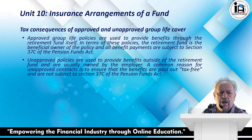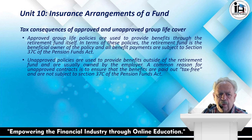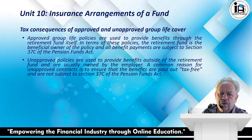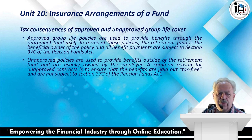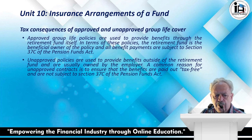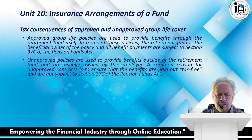What are the tax consequences of approved versus unapproved group life cover? Approved group life cover policies are used to provide benefits through the retirement fund itself. The retirement fund is the beneficiary and owner of the policy, and all benefit payments are subject to Section 37C of the Pension Funds Act. Unapproved policies are used to provide benefits outside of the retirement fund and are usually owned by the employer. A common reason for an unapproved contract is to ensure benefits are paid out tax-free, not subject to Section 37C.